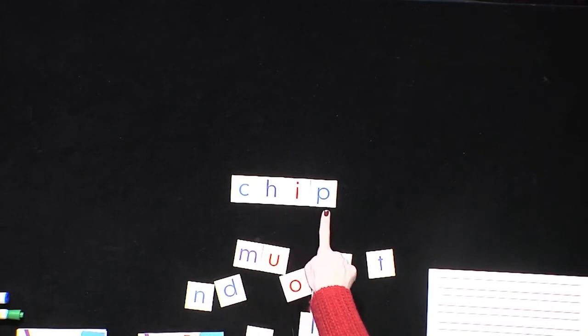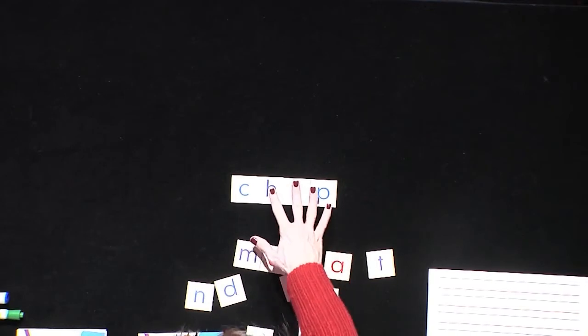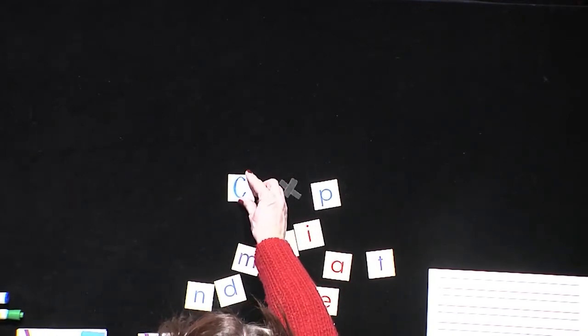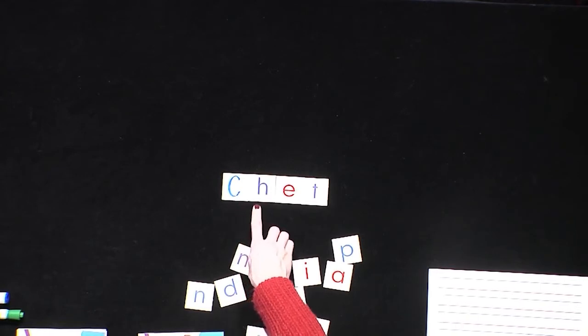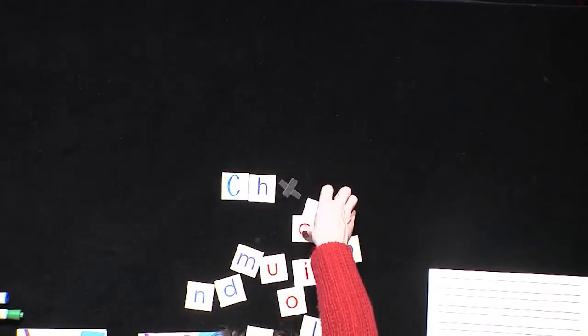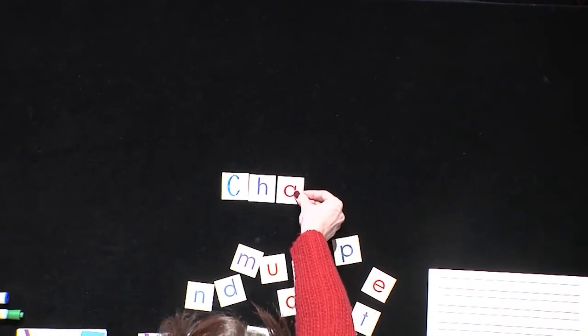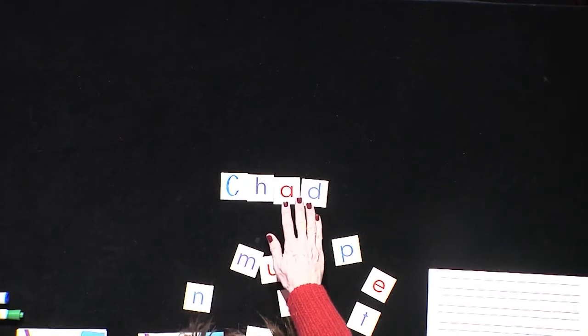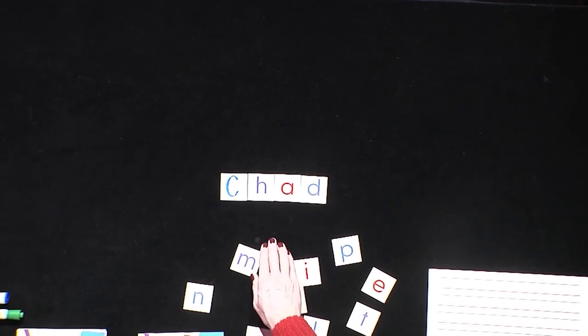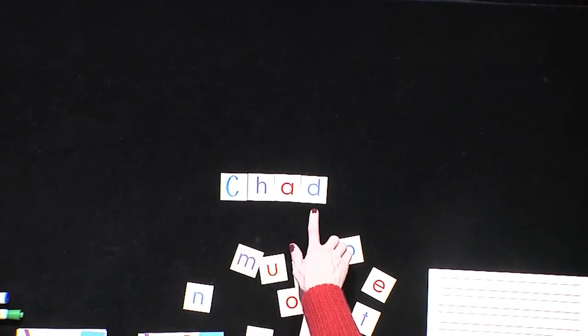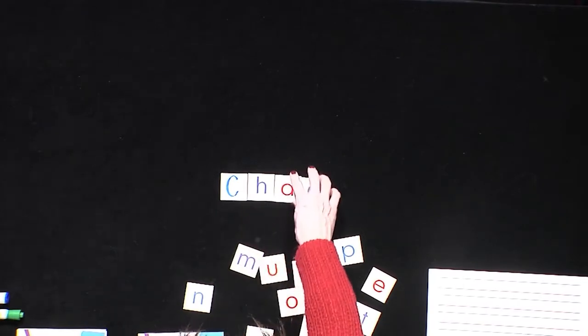Let's do just a couple more. CH... I-P... chip. Very good. Now I'm going to turn that C over because I need a capital C for this word. And if it begins with a capital letter, what does that tell us? My word is a name. Let's sound out that name. CH... E-T... Chet. That was the name we saw in our story yesterday. Try this one on your own — see if you can figure out what that word is. If you said 'Chad', you are exactly right. That was the other name we saw in our story yesterday.